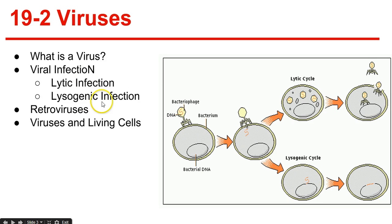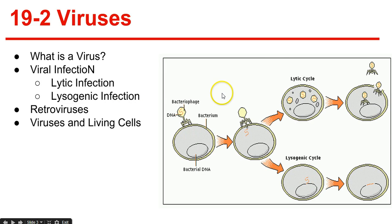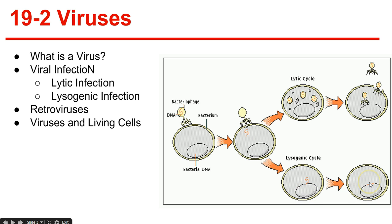Then we have a lysogenic infection. A lysogenic infection is when a host cell makes copies of the virus indefinitely. The virus integrates its DNA into the DNA of the host cell, and the viral genetic information replicates along with the host cell's DNA. The viral DNA embedded in the host DNA is called a prophage. We can see the two different forms of infection: in lytic infection the DNA is released when the cell bursts, while in lysogenic infection the DNA is transcribed into the cell's DNA and reproduced along with the cell.